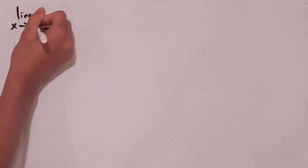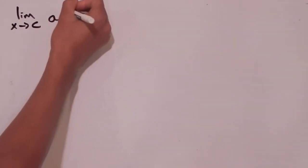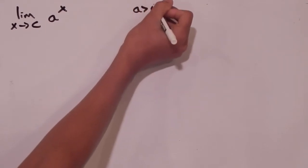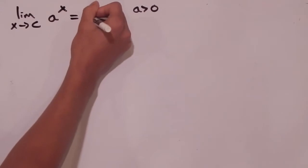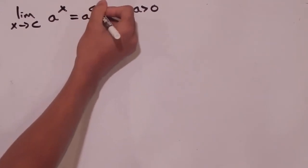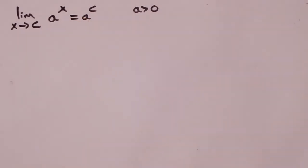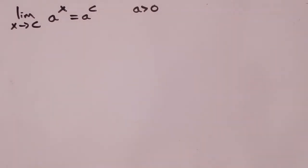In this video we're going to take a look at the limit of exponential functions. We're going to look at the limit as x goes to some constant c of a to the x, when a is greater than 0. And we're going to say that this is always equal to a to the c, where c has to be in the domain of a to the x — which turns out to be any real number.